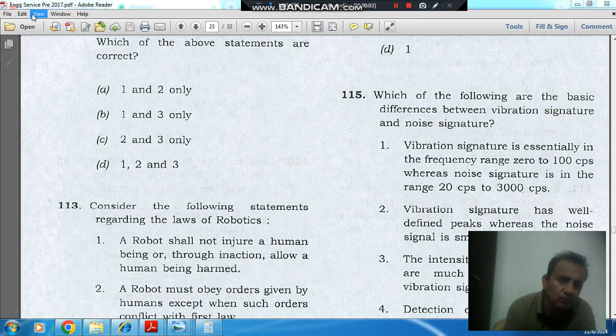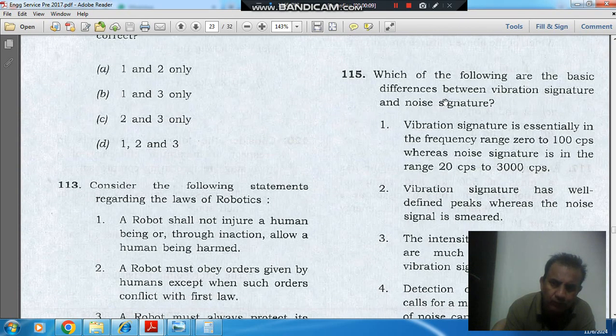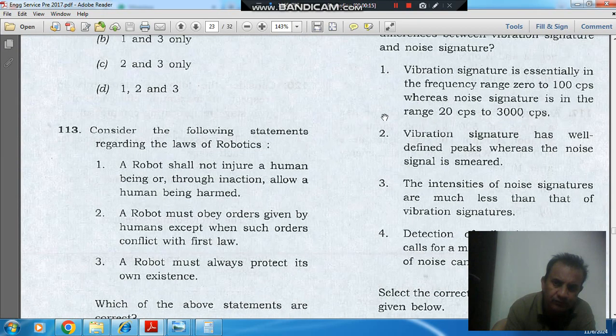Hello, welcome again. We are solving Engineering Services P 2017 paper, question number 115: Which of the following are the basic differences between vibration signature and noise signature? One: Vibration signature is essentially in the frequency range 0 to 100 cycles per second, whereas noise signature is in the range...